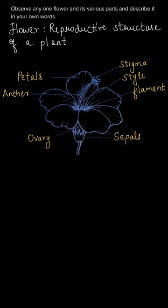In this question, we have to observe any one flower and its various parts and describe it in our own words. A flower is a reproductive structure of a plant. This is a structure of a flower, and it has many parts: sepals, ovary, anther, petals, stigma, style, and filament.